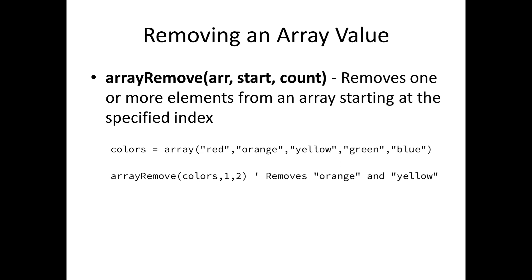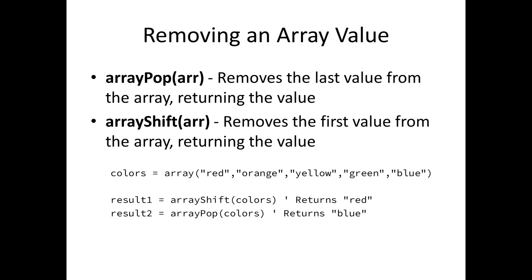The remove function takes in the array you want to remove a value from, the location of where you want to remove it, and how many values to remove. Here we're removing orange and yellow from the colors array. Orange is at index one and we want to remove two values, so we pass two for that third parameter. Two other functions for removing array values are array pop and array shift, which remove the last value or the first value from the array respectively.